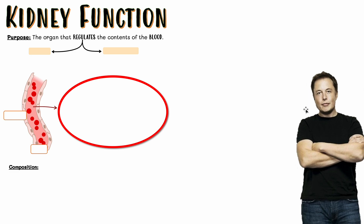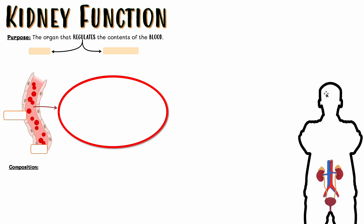Throughout the IB we learn about lots of systems in our body — for example, the nervous system, our immune system, our respiratory system, our cardiovascular system. Now we're going to add another one: the urinary system. I'm going to use this slide to give you guys the big picture and some key structures you need to know. Let's open up Elon Musk and see what's going on inside him — we've removed all systems except the urinary system.